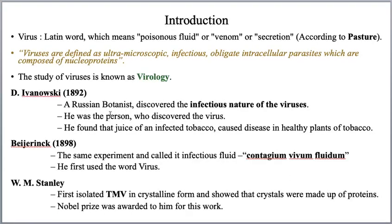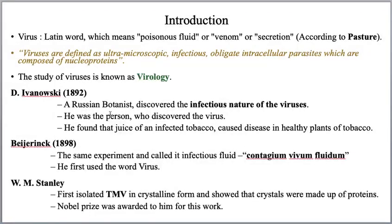Ivanovsky found the juice of the infected tobacco plant. He took an infected tobacco plant — one that was suffering from a disease — squeezed out some juice, and in that juice virus particles were identified. So in 1892, Ivanovsky, a Russian botanist, found the virus in the infected tobacco juice.